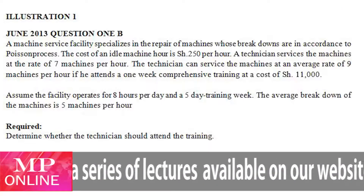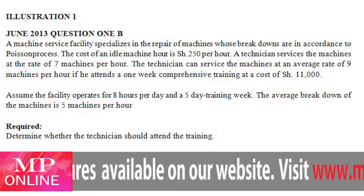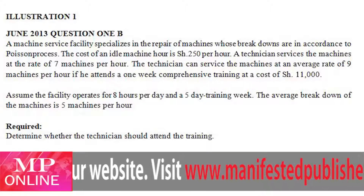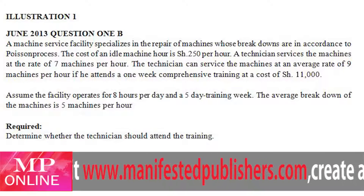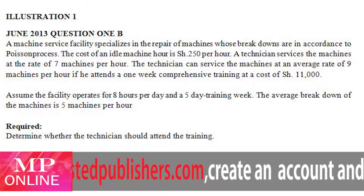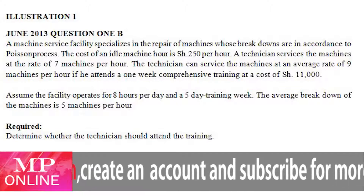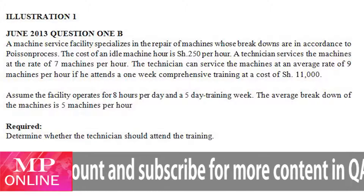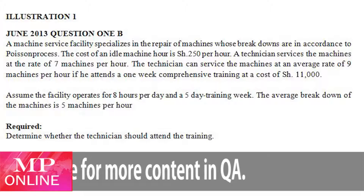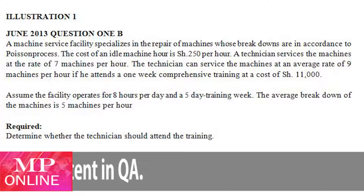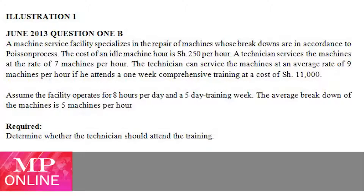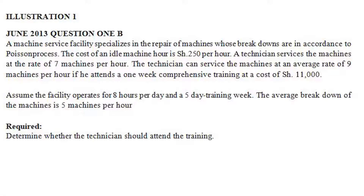It reads that a machine service facility specializes in the repair of machines whose breakdowns are in accordance to a Poisson process. The cost of an idle machine hour is shillings 250 per hour. A technician services the machines at the rate of seven machines per hour. The technician can service the machines at an average rate of nine machines per hour if he attends a one-week comprehensive training at a cost of shillings 11,000. Assume the facility operates for eight hours per day and a five-day working week. The average breakdown of the machines is five machines per hour. Determine whether the technician should attend the training.